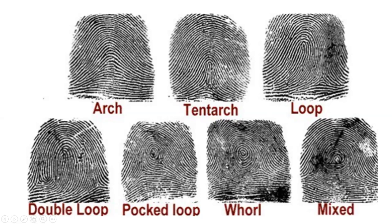However, if I see two deltas and I'm confused whether it's a pocket loop or a whirl, the fact that I see the two deltas on either side of the area where it looks like it's turning upon itself lets me know that it's a whirl.